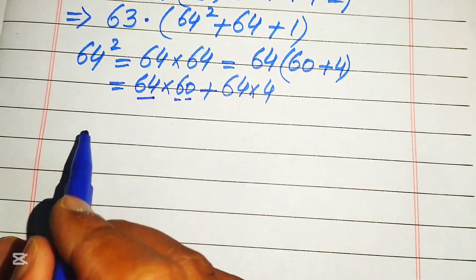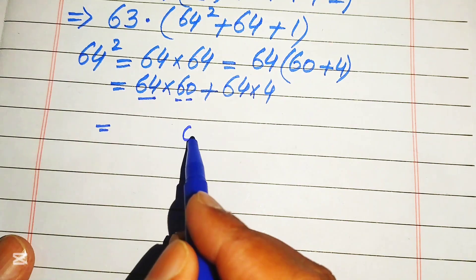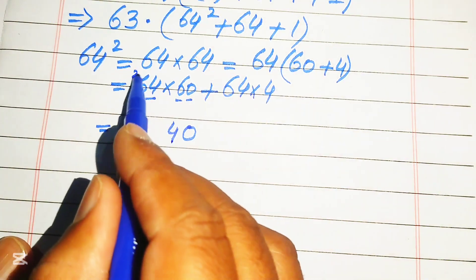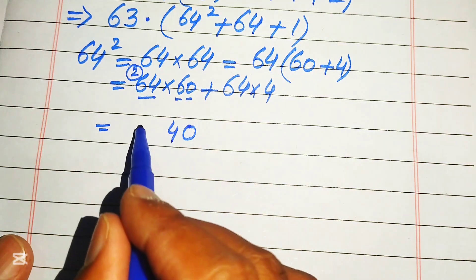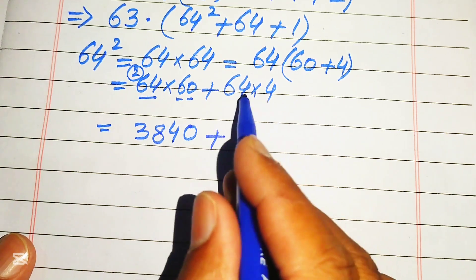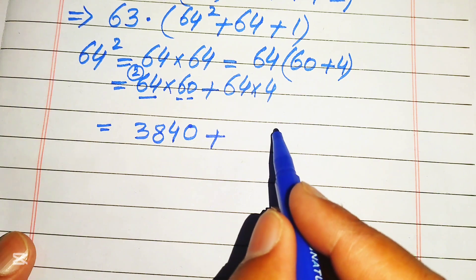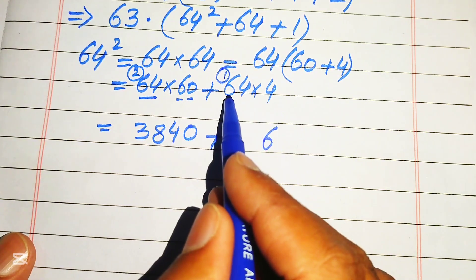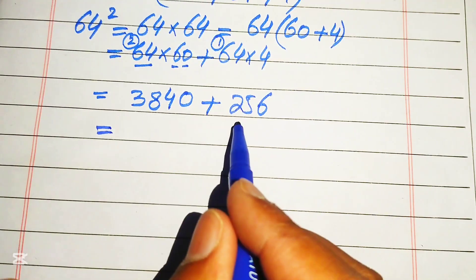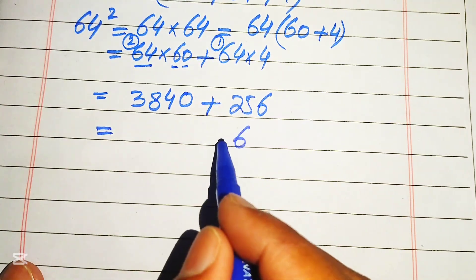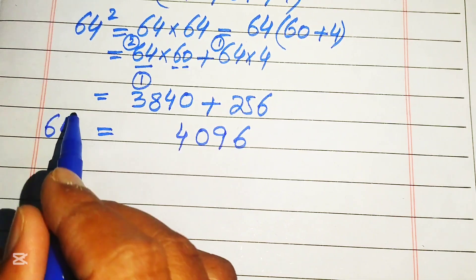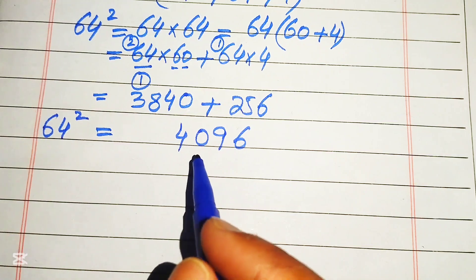We treat this as a two-digit by two-digit multiplication. Multiplying 0 with 64 gives 0; multiplying 6 with 64: 6 times 4 is 24, write 4 carry 2; 6 times 6 is 36 plus 2 is 38. So 64 times 60 equals 3840. For 4 times 64: 4 times 4 is 16, write 6 carry 1; 4 times 6 is 24 plus 1 is 25, giving 256. Adding: 3840 plus 256, we get 64 squared equals 4096.